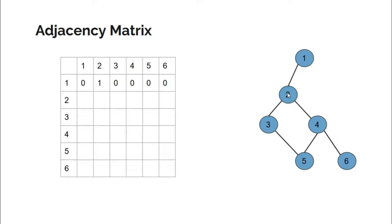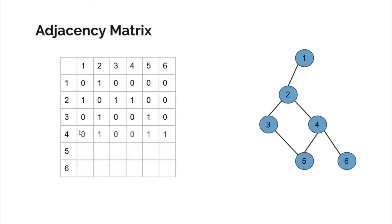Similarly, for node 2 there are three edges: 2 is connected to 1, 2 is connected to 3, and 2 is connected to 4. That is why in row 2, cells (2,1), (2,2), (2,3), and (2,4) would be 1 and the rest will be 0. The same logic applies for nodes 3, 4, 5, and 6.